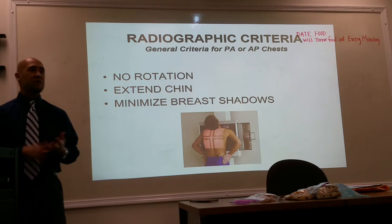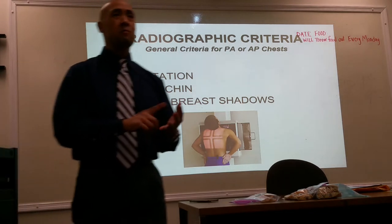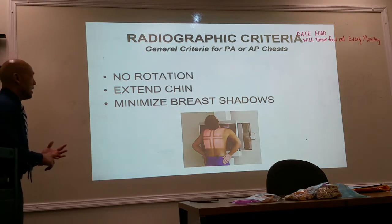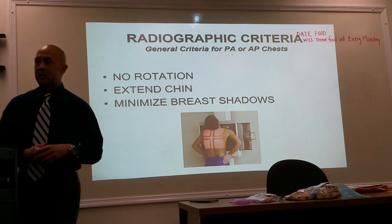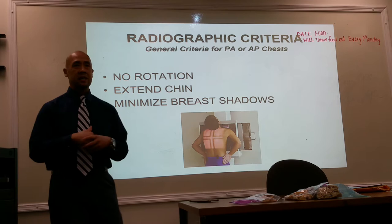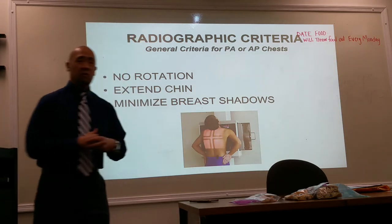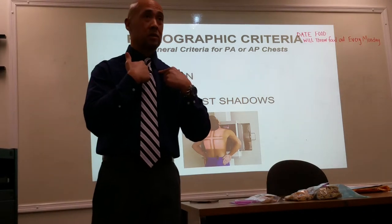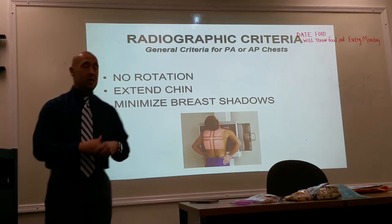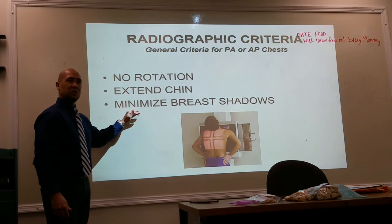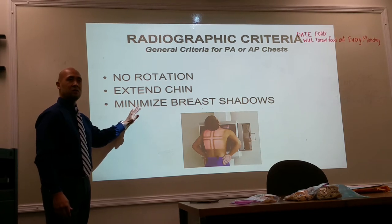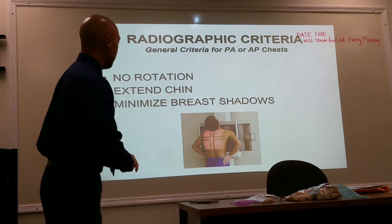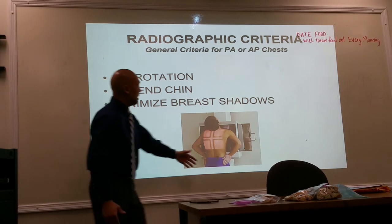Radiographic criteria: the basic views for chest x-ray are AP or PA and a lateral. Your criteria includes making sure the patient isn't rotated. To evaluate for rotation, we assess the SC joints. We also want to get the chin out of the way, and patients with pendulous breasts — we need to get those out of the way because breast shadow can deteriorate the radiographic image.